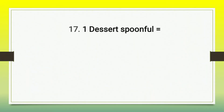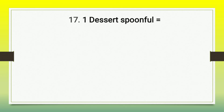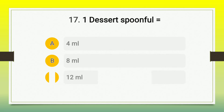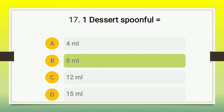Question number 17: one dessertspoonful is equal to — A) 4 ml, B) 8 ml, C) 12 ml, D) 15 ml. The correct answer is option B, 8 ml. Please remember: one teaspoonful is equal to 4 ml, one dessertspoonful is equal to 8 ml, and one tablespoonful is equal to 15 ml.